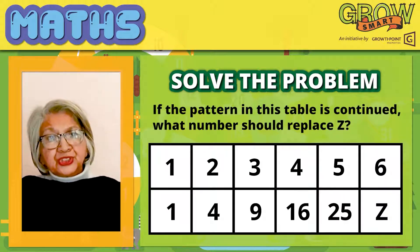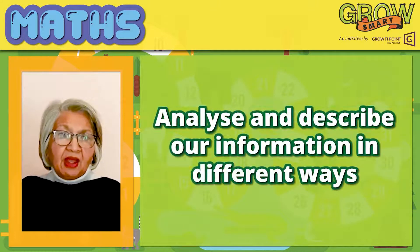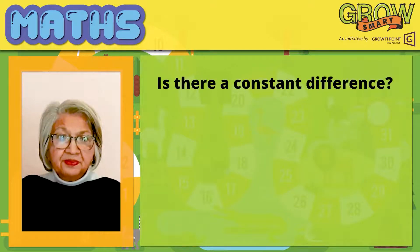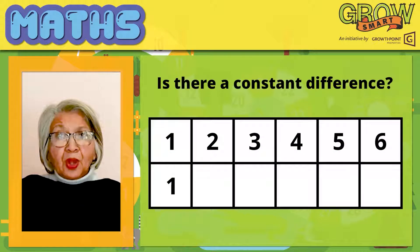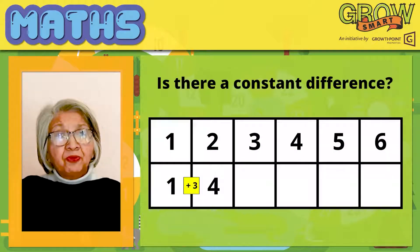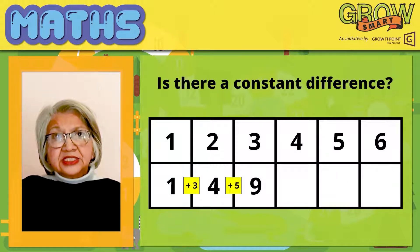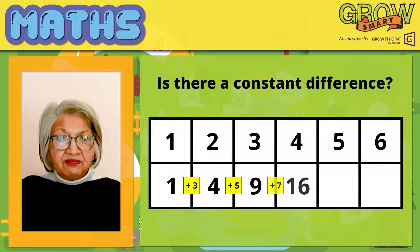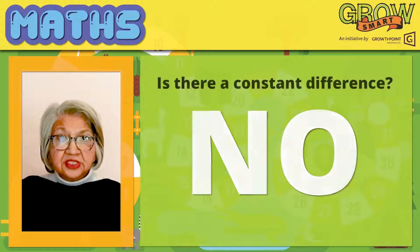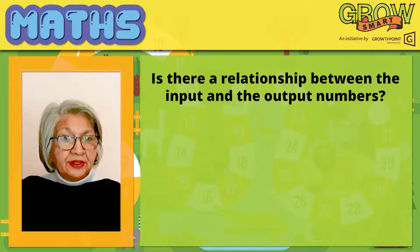What are the small things to do? We must analyze and describe our information in different ways. Is there a constant difference? The difference between 1 and 4 is equal to 3. The difference between 4 and 9 is equal to 5, and the difference between 9 and 16 is equal to 7. So there is no constant difference. Is there a relationship between the input and the output numbers?